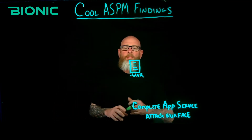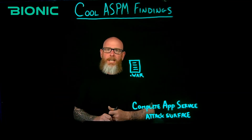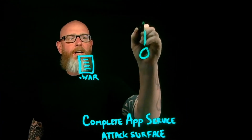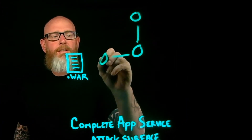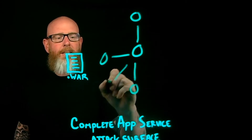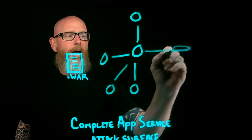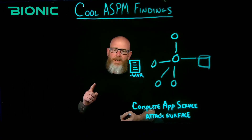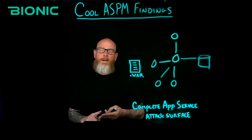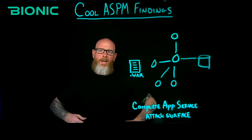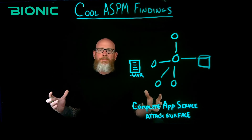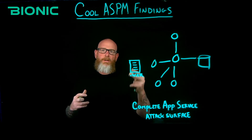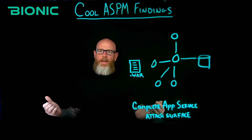By reverse engineering the war file, we basically expand the interaction of all the application services. Now you have a complete lens of everything happening within the application — all the services, whether it's a web service, a connection to a third party, a connection within message brokers, or to a database. Now you know the complete application attack surface based on just reverse engineering that war file with ASPM.